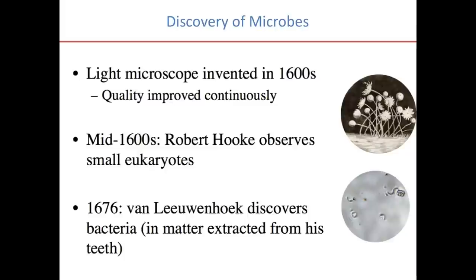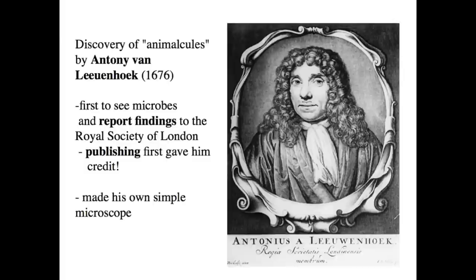Let's talk about the discovery of microbes. Light microscopes were invented in the 1600s, and the quality of these microscopes improved continuously. The very first microorganisms that were observed were small eukaryotes, such as fungi. They were obviously the first to be observed because they tend to be larger and can be seen at resolutions that render smaller organisms unviewable.